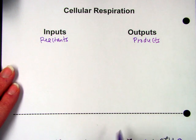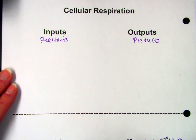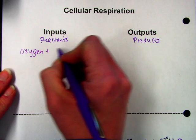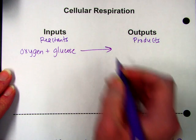And if you look here, for cellular respiration, it's kind of like the opposite of photosynthesis. So what happens here is that we start with oxygen and glucose.